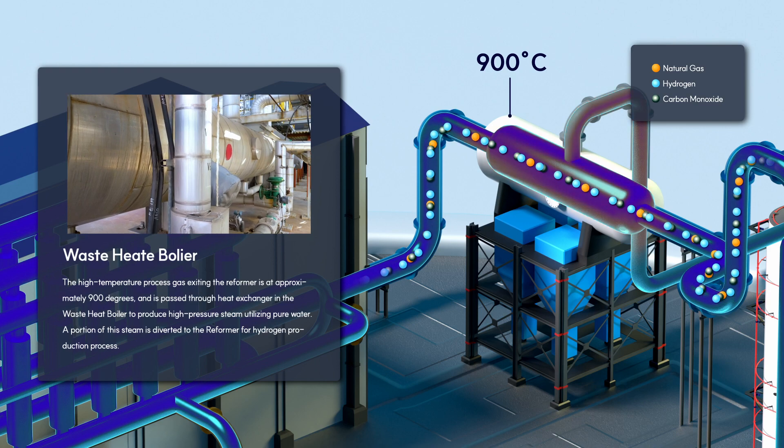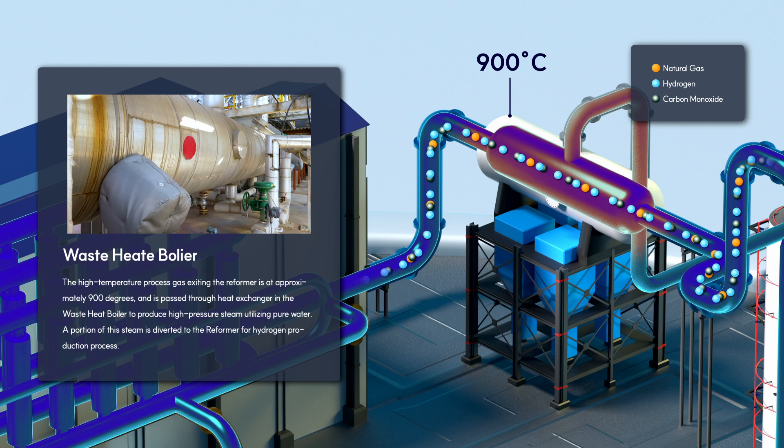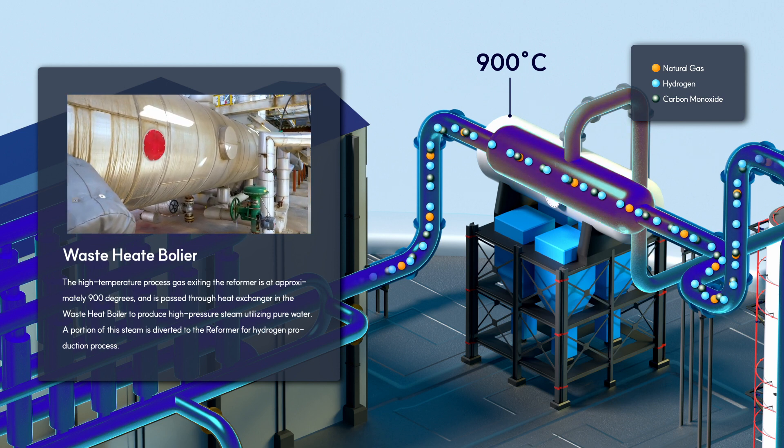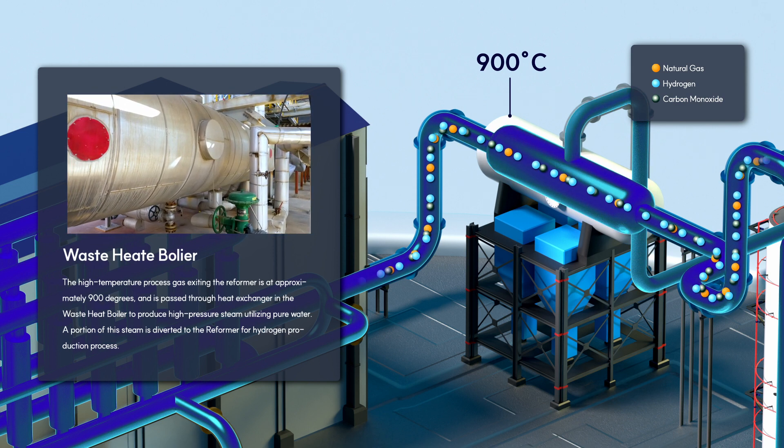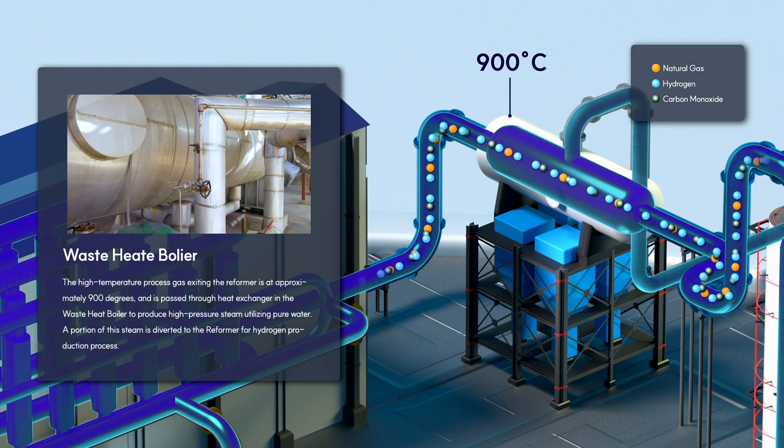The high-temperature process gas exiting the reformer at approximately 900 degrees passes through heat exchangers in the waste heat boiler to produce high-pressure steam utilizing pure water. A portion of this steam is diverted to the reformer for hydrogen production.